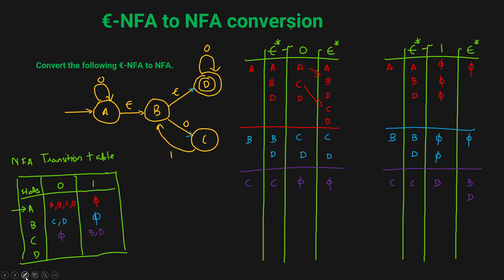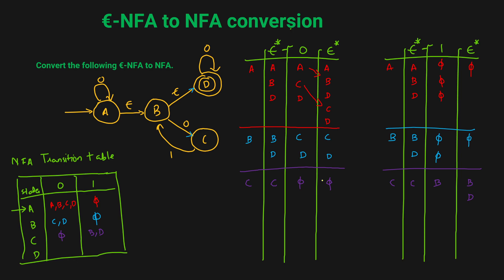The last one is state D, which is our final state. The Epsilon closure of state D is just state D, because from here you don't go anywhere on Epsilon. If you get input 0, you go to state D itself, and the Epsilon closure of D is D. So state D on input 0 gives D. For input 1, it's not mentioned, so phi, and the Epsilon closure of phi is phi. So state D on input 1 gives phi.